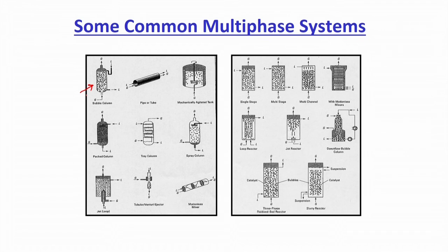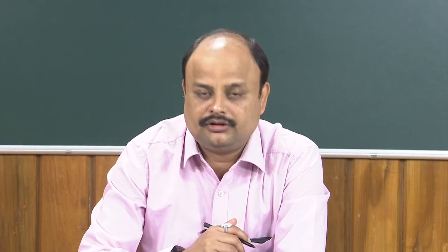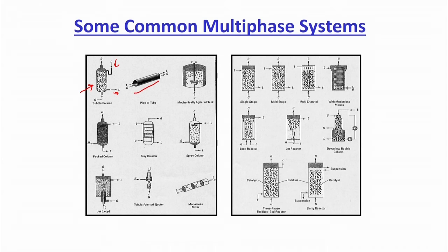For gas-liquid reactions, there are many reactor arrangements. One is a simple column where liquid is in batch or continuous, and gas is bubbled from the bottom upward. Another is a plug flow reactor where gas and liquid flow simultaneously inside a tube — if the tube length is sufficiently long compared to diameter, it behaves as a plug flow reactor. A CSTR-type arrangement can also be used, with agitation and gas injection giving combined mixing effects.